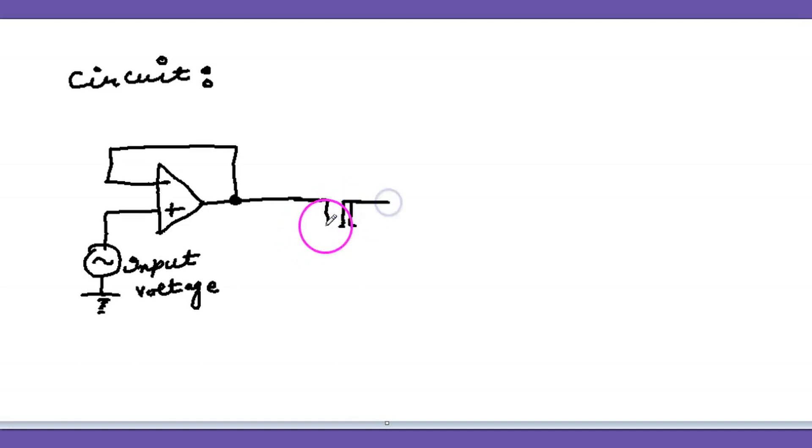Now here we are connecting a MOSFET, N-channel MOSFET in enhancement mode. This MOSFET has terminals: source, drain, and gate. This is the gate, and to the gate a control pulse is applied, a square wave. It is applied to the gate.